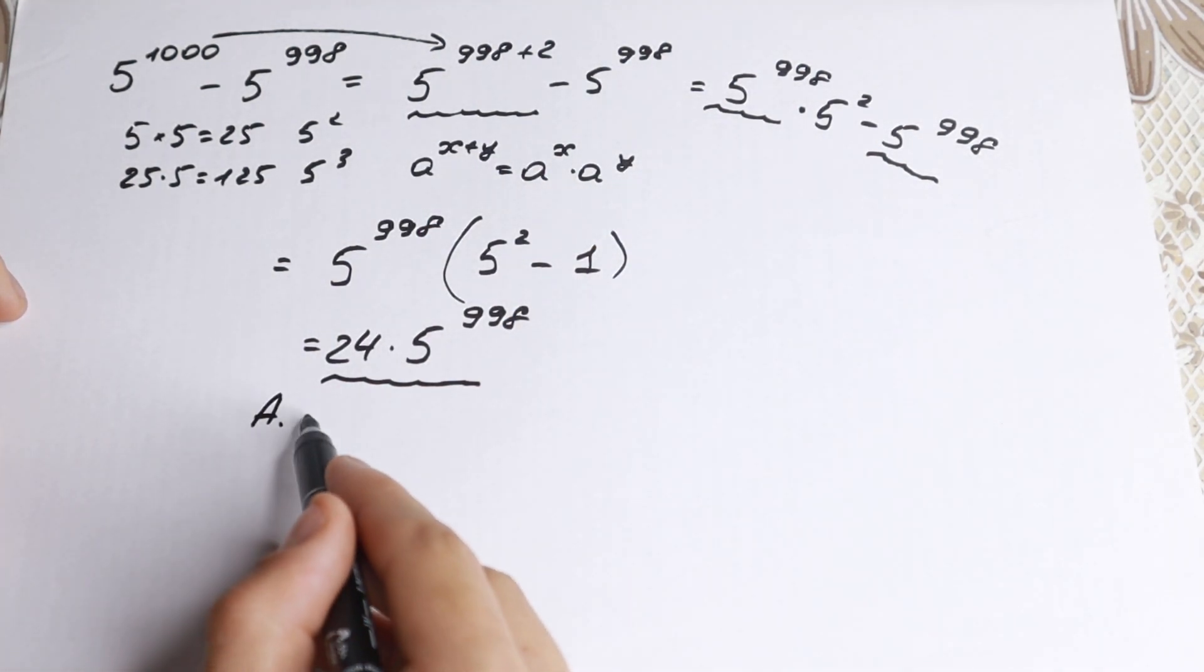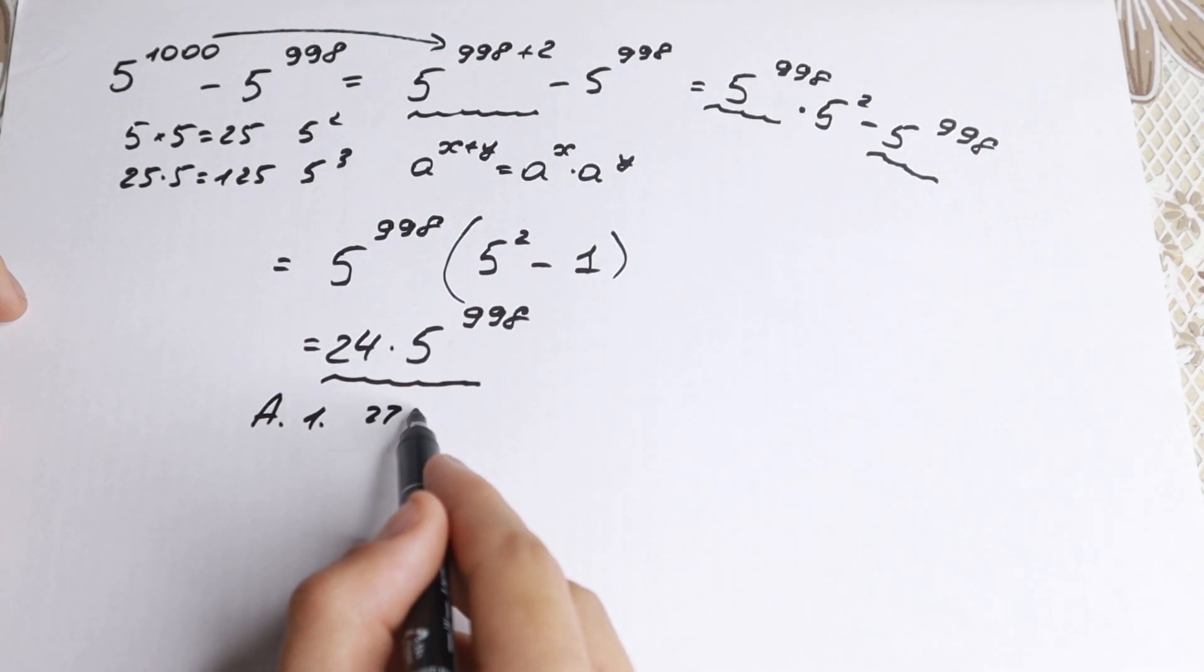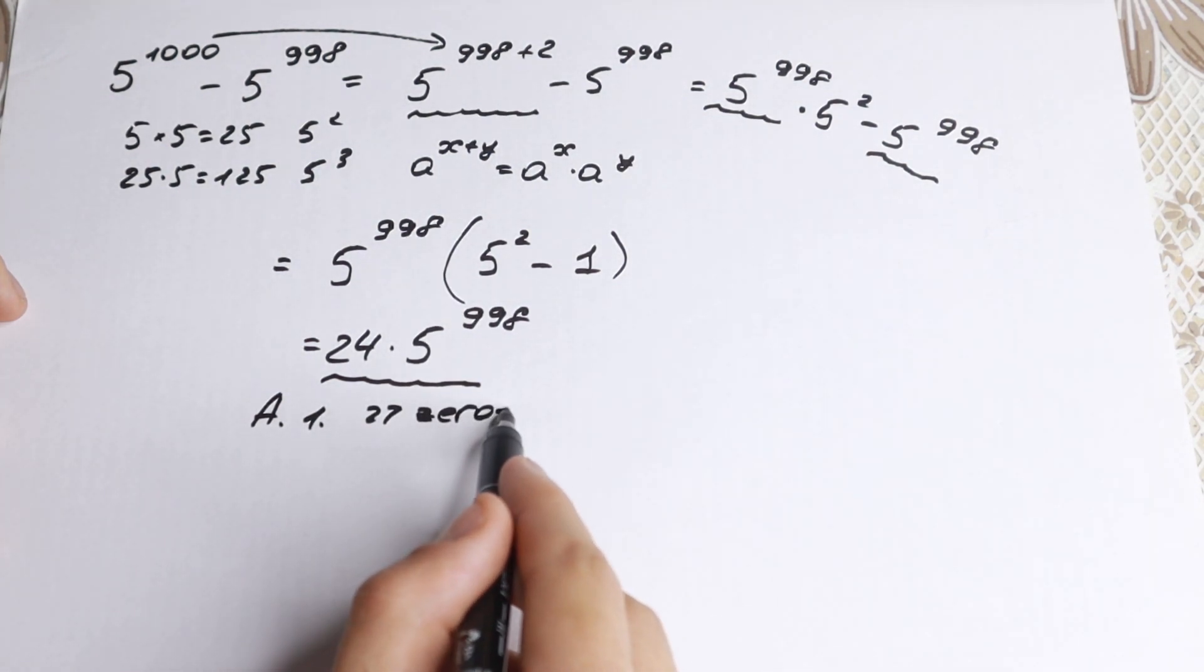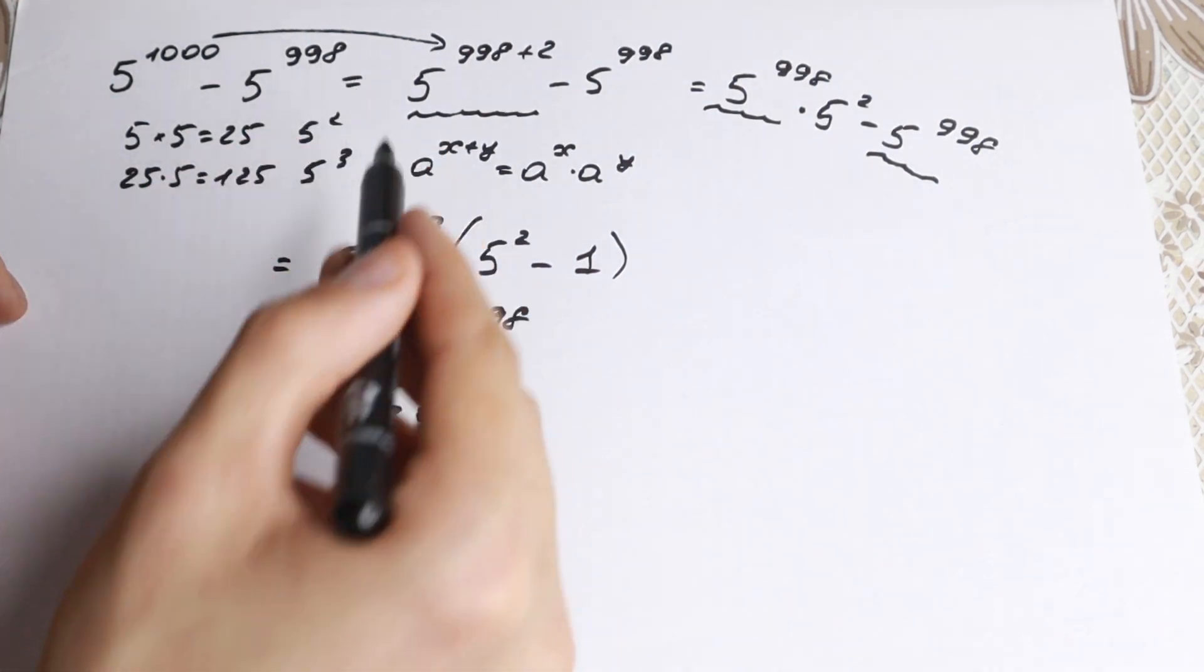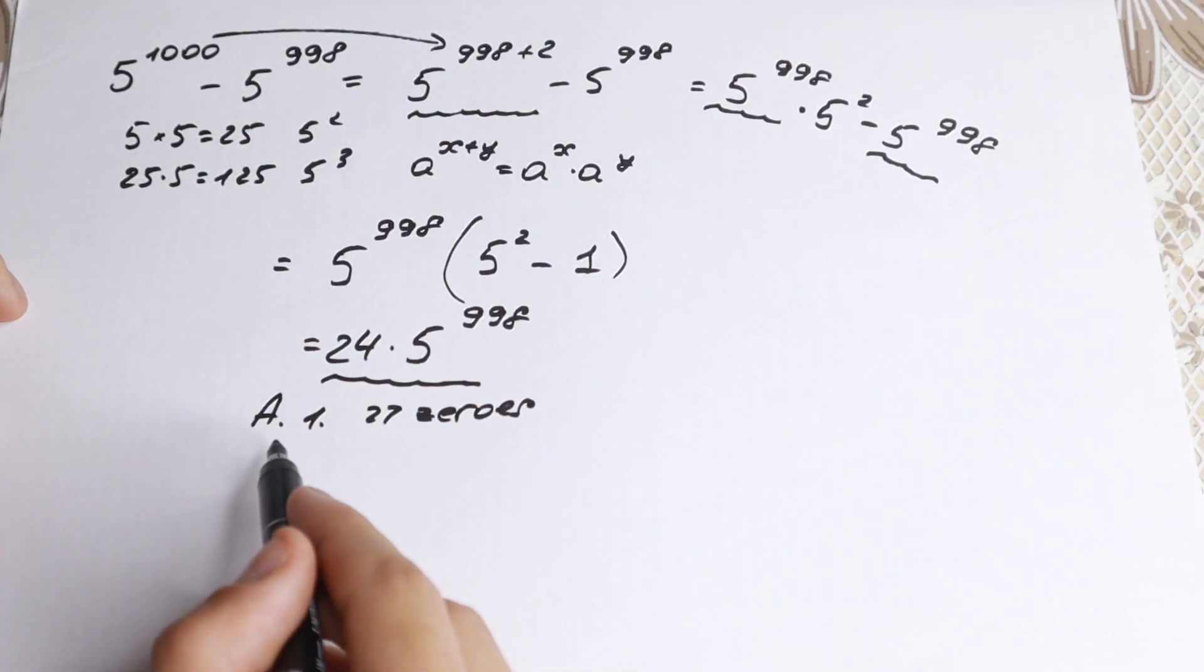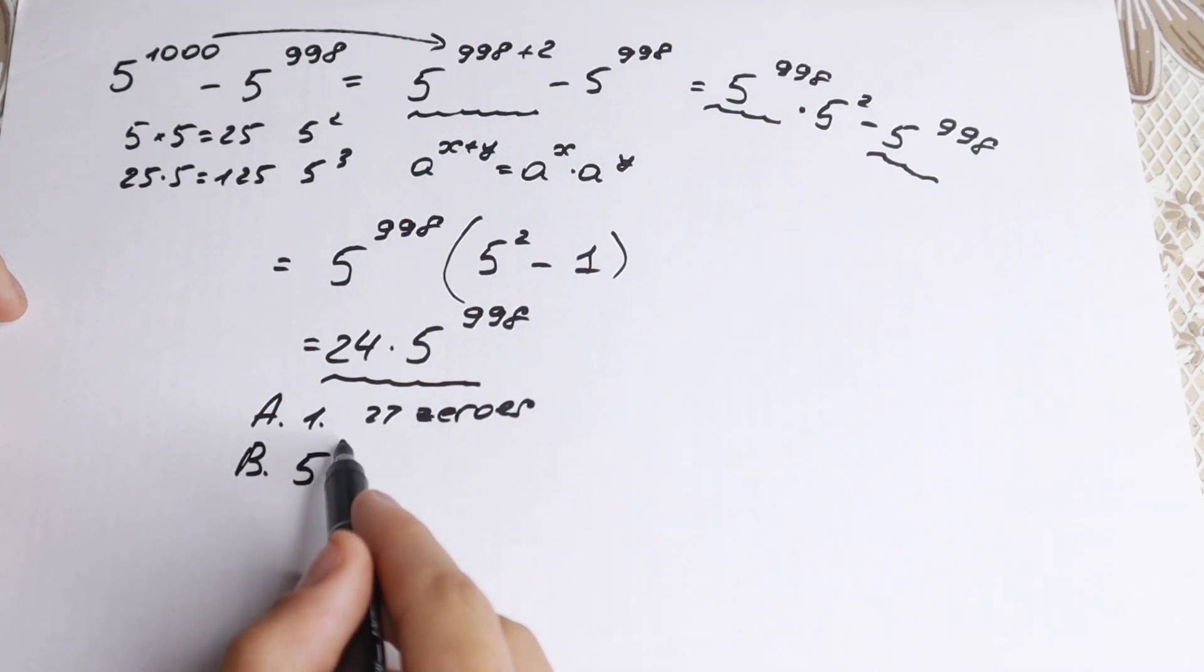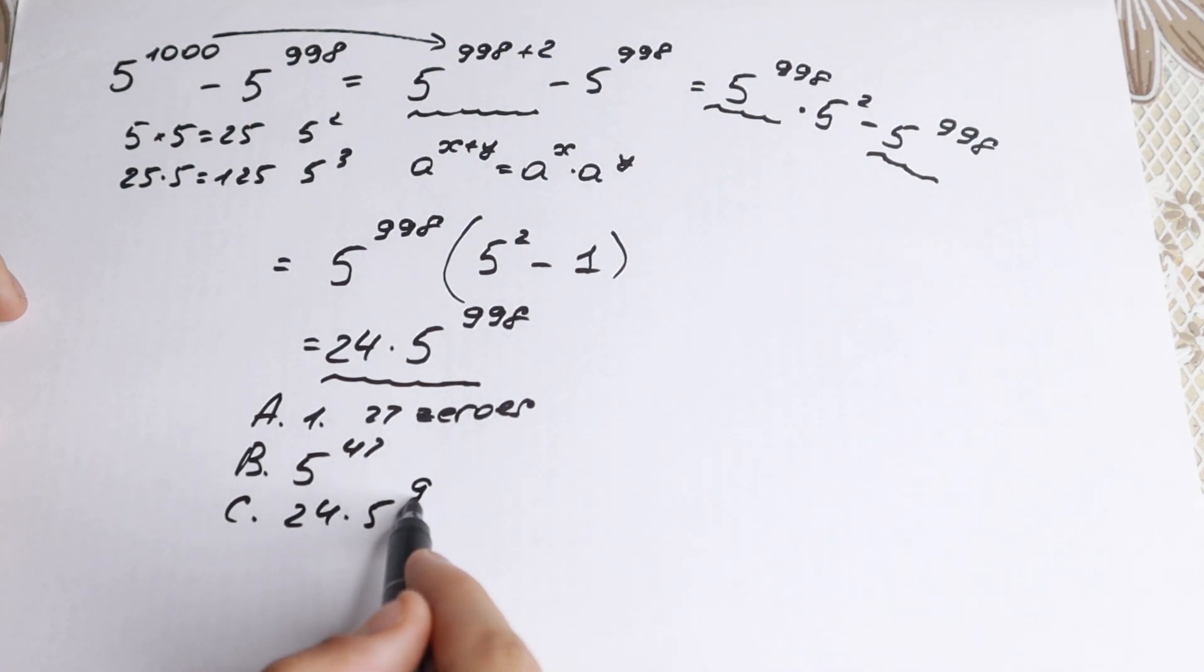You don't need to raise 5 to the power 1000—that's a bad mistake. You'll have answer options like 5 to the power 47, for example. 24 times 5 to the power 998 is the correct mathematical format, and that's our solution.